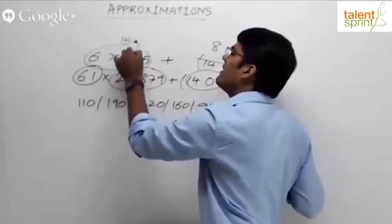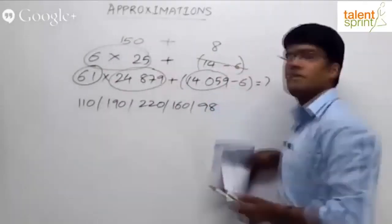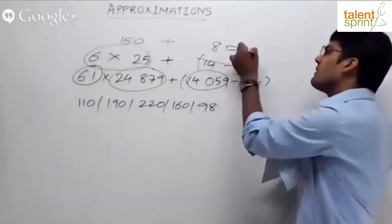What is 6 into 25? 150. 150 plus 8. 158 should be the answer. Approximately 158.